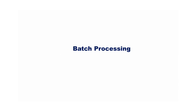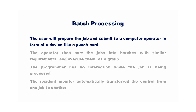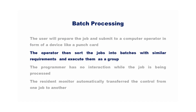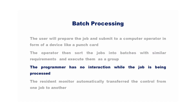Let us discuss the different types of operating systems. Batch processing was used during the earlier times when users used to write programs on punch cards. In batch processing, the user will prepare the job and submit it to a computer operator in the form of a device like a punch card. The operator then sorts the jobs into batches with similar requirements and executes them as a group. For example, all Fortran programs were run together so that the Fortran compiler tape would only have to be mounted once. In this case, the programmer has no interaction while the job is being processed.